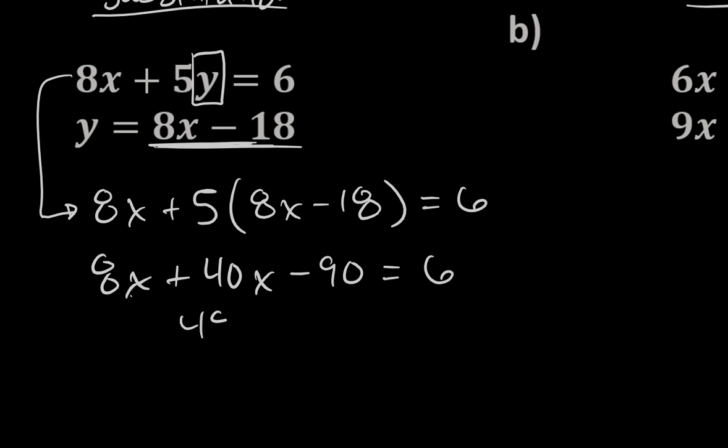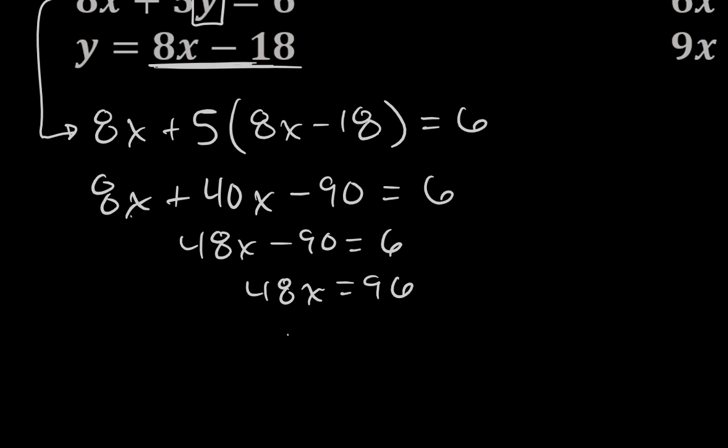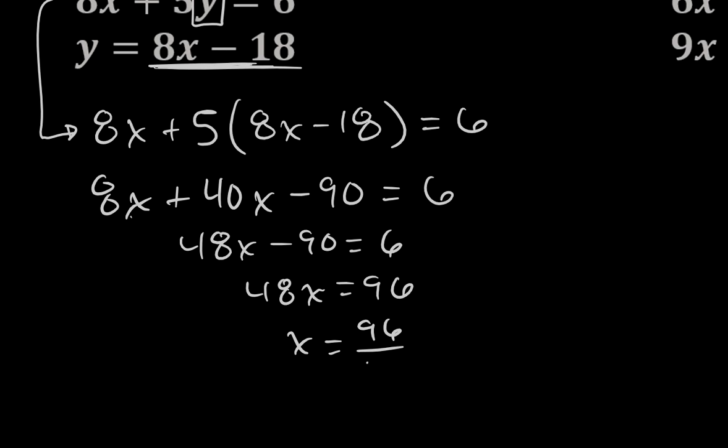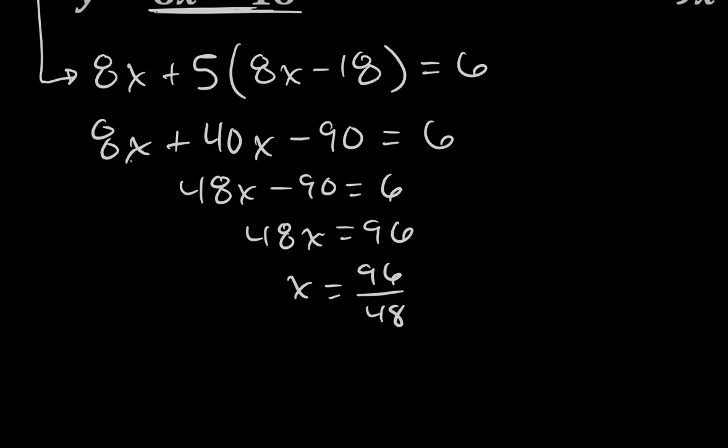If I combine my like terms, I've got 48x minus 90 equals 6. I can add 90 to each side and divide both sides by 48. So x is 96 over 48, which is fortunately the same thing as 2. So I know x is 2.